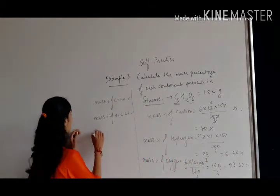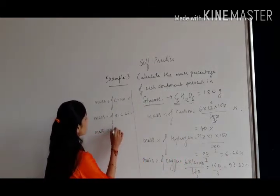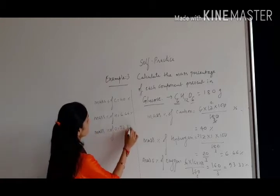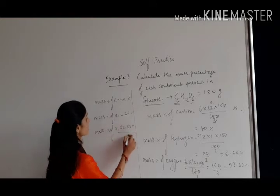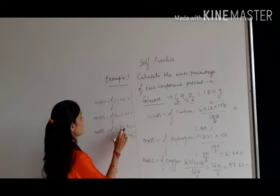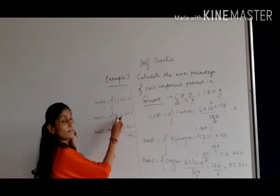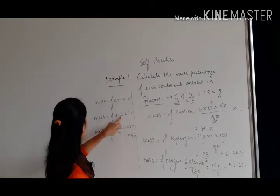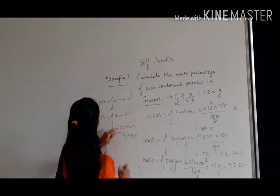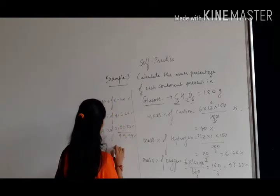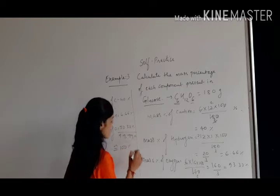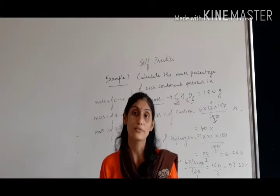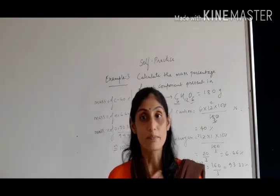So here we can verify the overall percentages, which come equal to approximately 100 percent — 40 plus 6.67 plus 53.33 is almost 100 percent. This is the method by which we can find out the mass percentage.